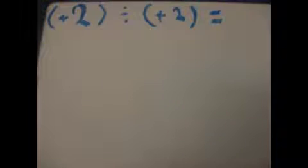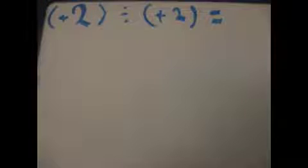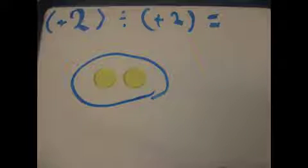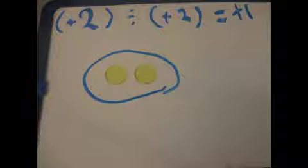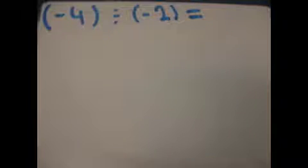When you divide 2 positive integers, you see how many groups of positive 2 you need to make positive 2. I added 1 group of positive 2 to get a total of positive 2. So the answer is positive 1.